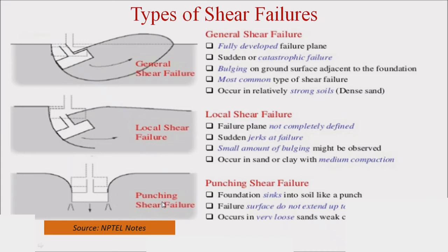Punching shear failure can be compared to punching papers — pressing the foundation directly into the soil sample, causing it to go inside linearly. This condition of punching shear failure occurs when the angle of shear resistance is less than 28 degrees.